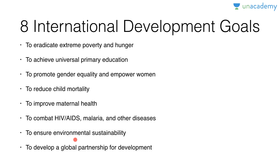Now for the specific targets under these goals: Target 1A — halve the number of people living on less than $1.25 a day between 1990 and 2015. Target 1B — achieve decent employment for women, men, and young people. Target 1C — halve the proportion of people who suffer from hunger between 1990 and 2015. Goal 2A — by 2015, all children should complete a full course of primary schooling. Goal 3A — eliminate gender disparity in primary and secondary education. Goal 4 deals with reducing child mortality — the IMR should be reduced by two-thirds; for example, in India the target is 29 per thousand.